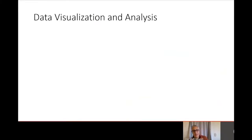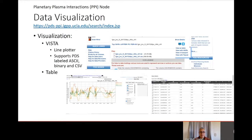The next set of tools and services are ones designed to aid users in visualization and analysis of data. The PPI website allows users to view the data either through Vista, which is a line plotter that supports PDS labeled ASCII, binary, and CSV files, or to view the data in a table format. Both of these are available on the PDS node webpages.